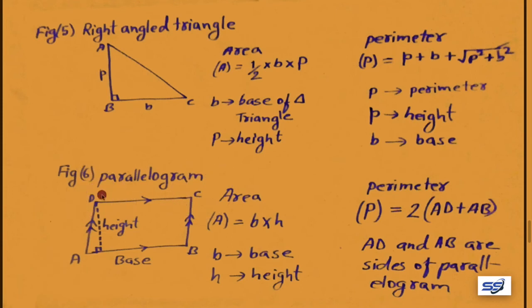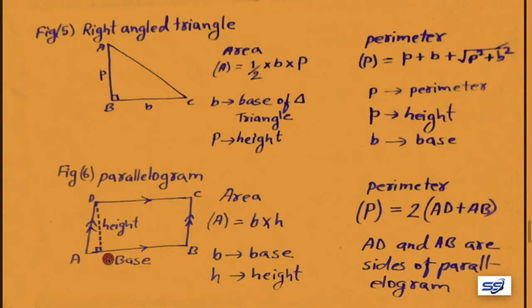Figure 6 shows a parallelogram ABCD where opposite sides are parallel and equal. A dotted line represents the height and AB represents the base. Area of parallelogram: A equals base into height, i.e., B times s, where B is base and s is height. Perimeter of parallelogram: P equals 2 into (AD plus AB), where AB and AD are the two distinct sides of the parallelogram.